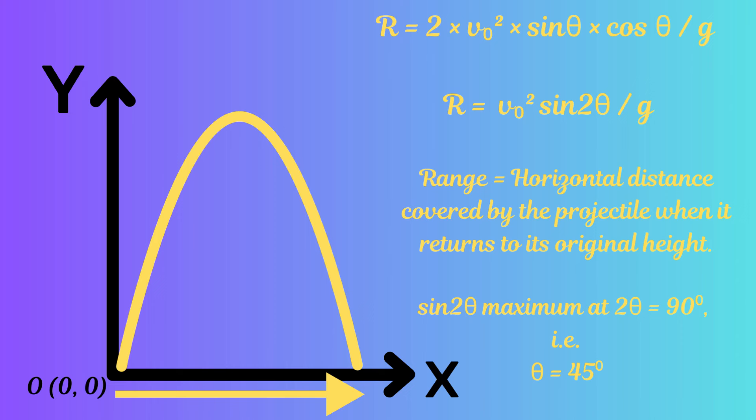The range expression contains the sine of twice theta. Because sine takes its largest value at 90 degrees, this means the range is highest when the projectile is released at an angle of 45 degrees with the horizontal axis — that is, when theta is 45 degrees.